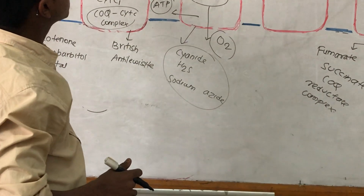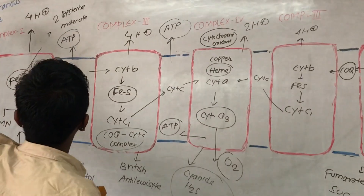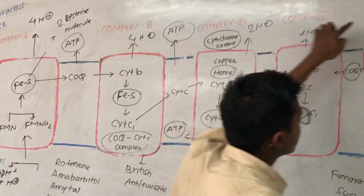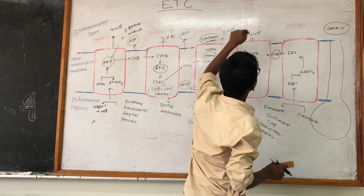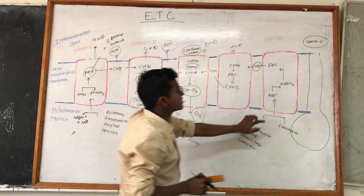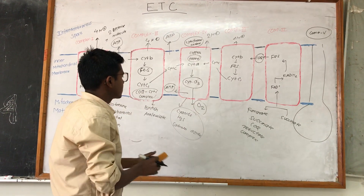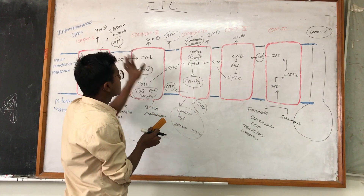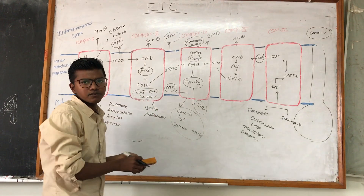This gradient causes hydrogen to be pumped through complex 5. This process is coupled with oxidative phosphorylation, which I will cover in my next lecture. This is all about the electron transport chain — I hope you have understood. Thank you.